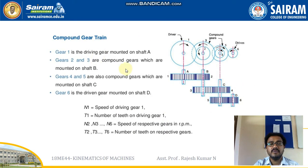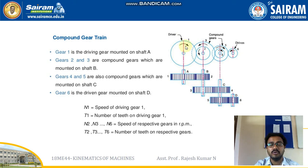I have named all these gears with numbers and the shafts as A, B, C, D. Gear 1 is the driving gear, which is mounted on shaft A.